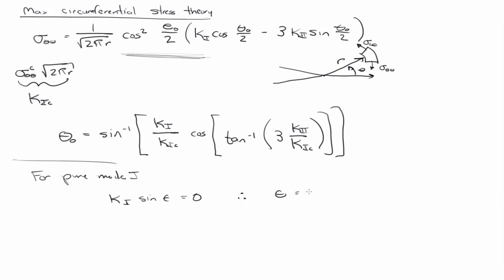For pure mode 2, what do you think it'll do? So, pure mode 2 would be pure shear like that. If I have a sample that's got a crack in it and I grab it on each end and I push on one side and pull on the other, which way is the crack going to grow? 45 degrees? That's a good guess.